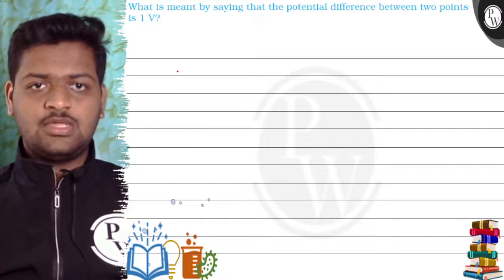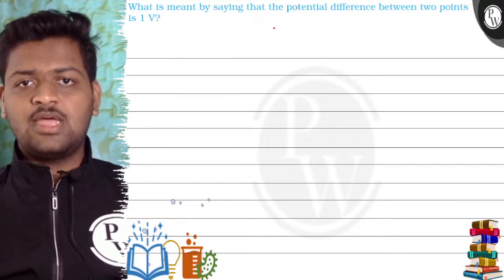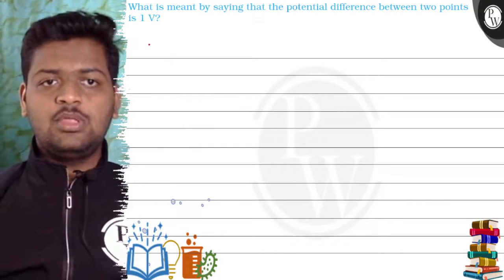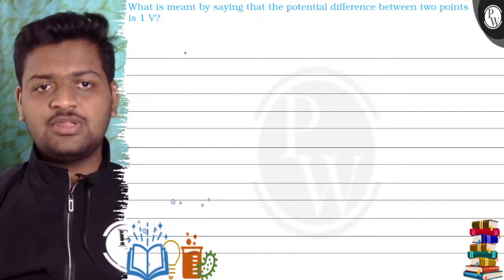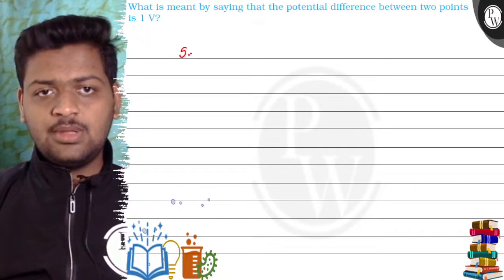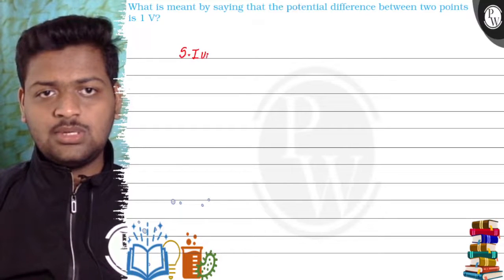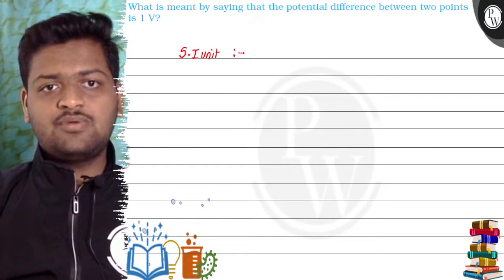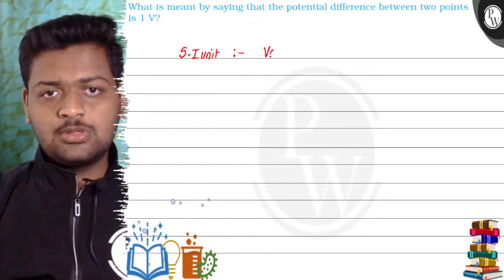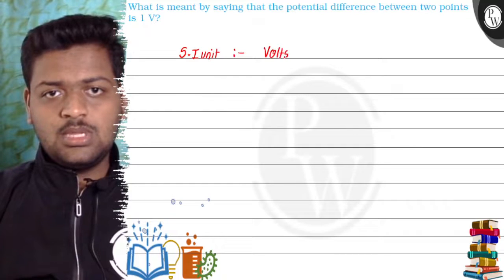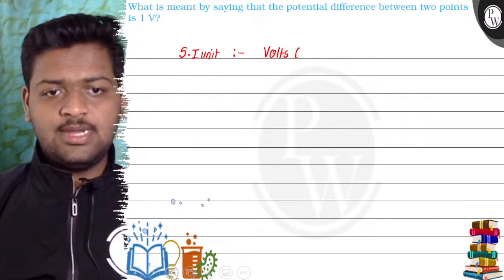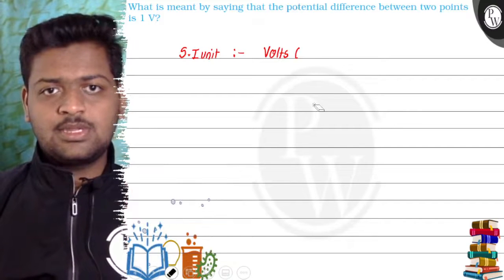Hello, let's see this question: What is meant by saying that the potential difference between two points is one volt? First of all, we will talk about potential difference. The SI unit of potential difference is volts.